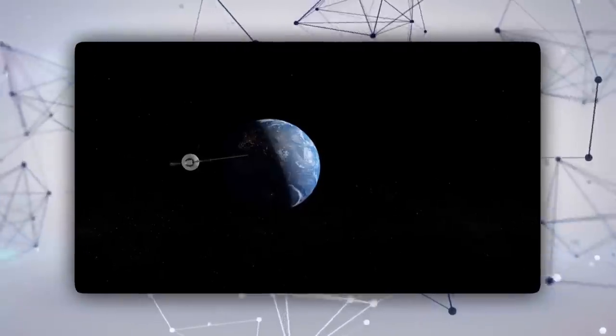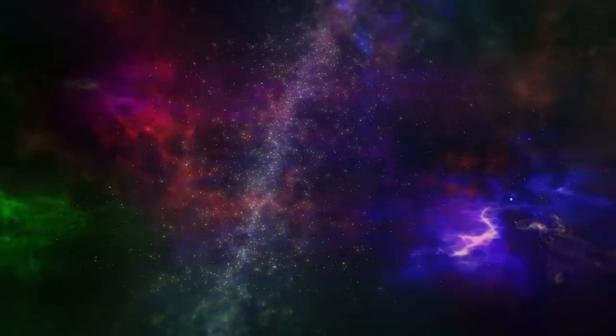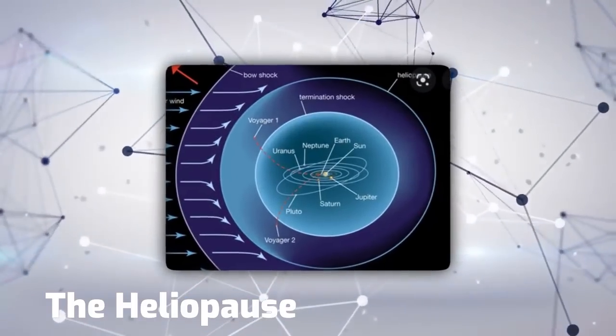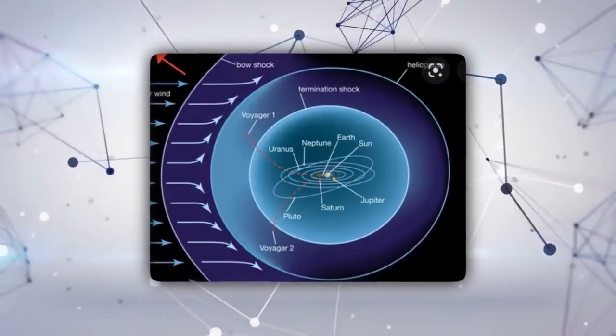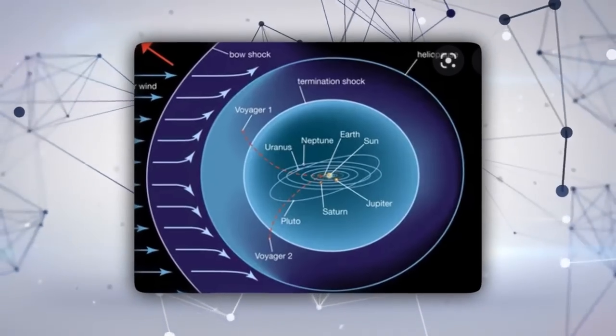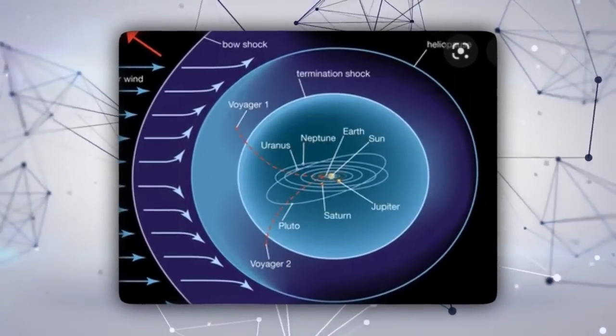To fully comprehend it, you must first comprehend the spatial constraints. A few distinct limits can be used to define the solar system's border. The heliopause is the one that Voyager probes passed. The solar winds, which originate from the sun, the center of our solar system, determine this limit.